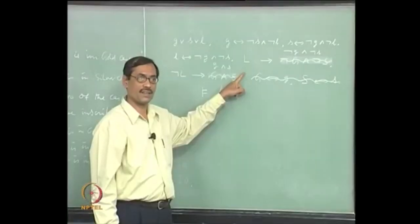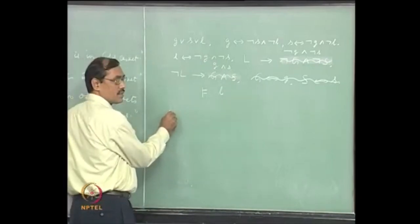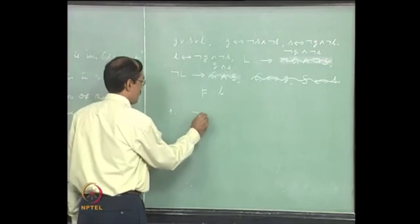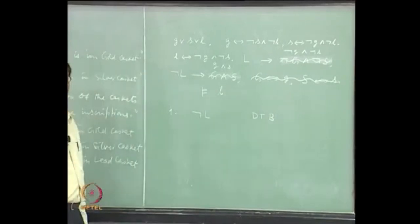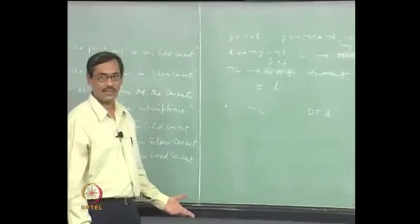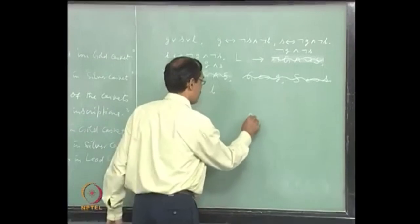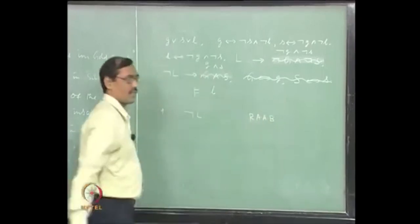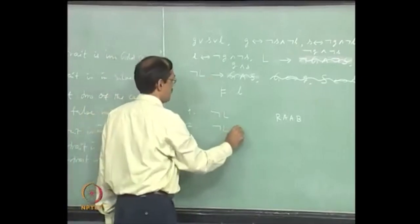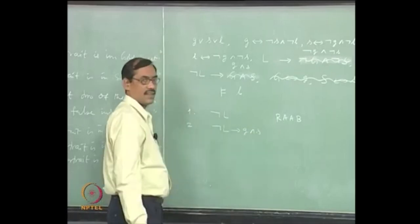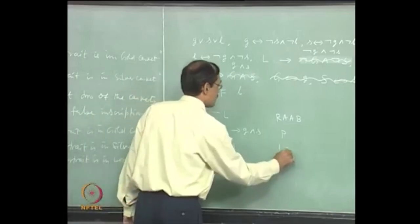Now, where should we start? Not-L. So reductio ad absurdum begins - or you want to put RA. Which one do you want? RA. Let us try. So you have RA begins. Next we have: introduce the premise, not-L implies G and S. That is a premise. So you get G and S by modus ponens.